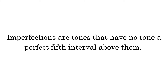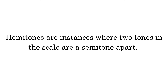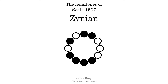Imperfections are tones that have no tone a perfect fifth interval above them. This scale has two imperfections, at two positions. Hammertones are instances where two tones in the scale are a semitone apart. This scale has four hammertones at four positions.